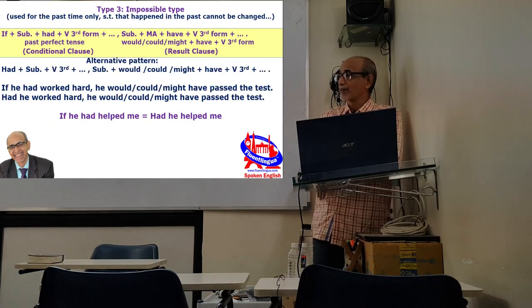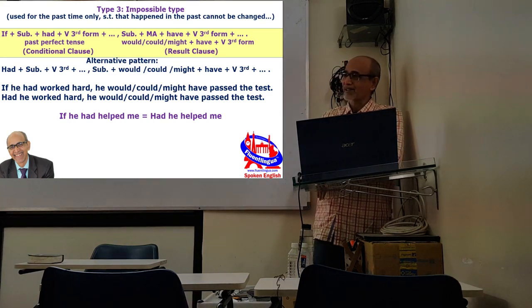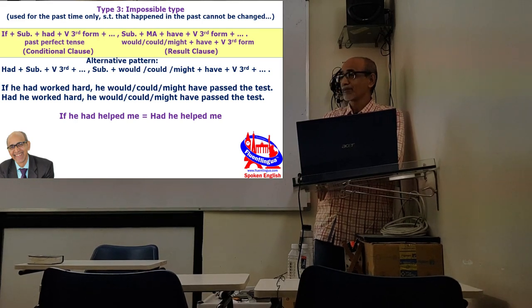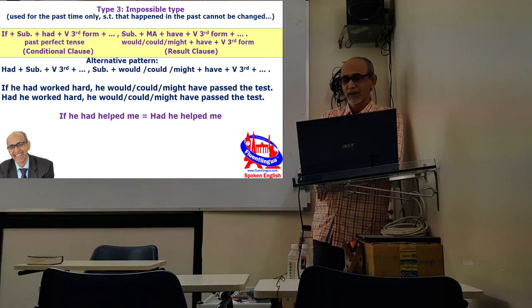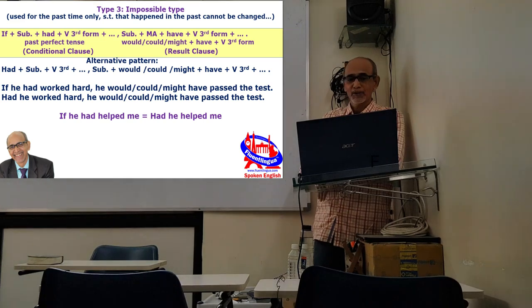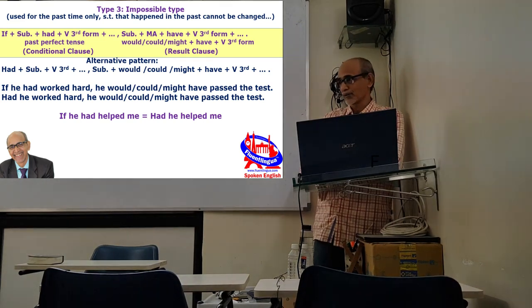And the third type, this is the only type for the past time, impossible type. Why is it impossible type? Because something that happened in the past you cannot change. Here it has a specific pattern. It uses the past perfect tense here, had plus past participle, the third form of the verb. And the result is modal auxiliary plus have plus past participle.